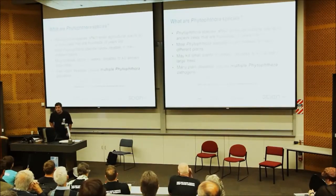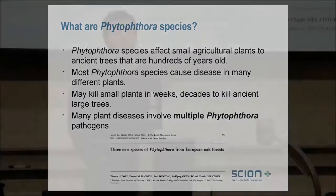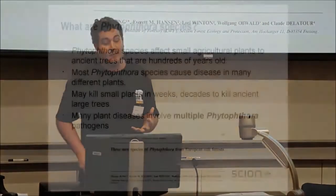So what are phytophthora species? They're a group of plant diseases — they affect forestry, agriculture, and natural ecosystems. Most phytophthora species cause diseases in many different plants; for instance, Phytophthora cinnamomi is known to affect well over 2,000 different plant species, causing decimation in many ecosystems. They may kill small agricultural plants within days, but they might take decades to kill large ancient trees, which makes it really difficult to manage them and to understand the exact impacts they're having on the environment.